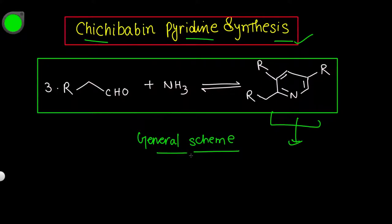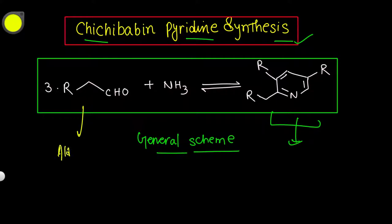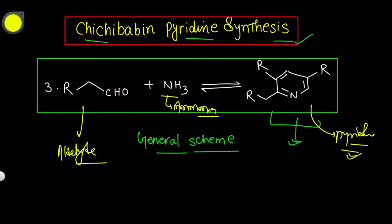This is our general scheme, now you are seeing on the screen — this is a general overview of this reaction. We have taken as substrate aldehyde (RCHO) and we have taken ammonia (NH3), and you will get a product: pyridine. We need to know the mechanism — how does pyridine form from this aldehyde and ammonia?